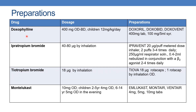The next drug is doxophylline. The dose is 400 mg once or twice daily, and for children 12 mg per kg per day. The preparations are Doxorin, Doxobit, and Doxovend, available in 400 mg tablets and 100 mg per 5 ml syrup.